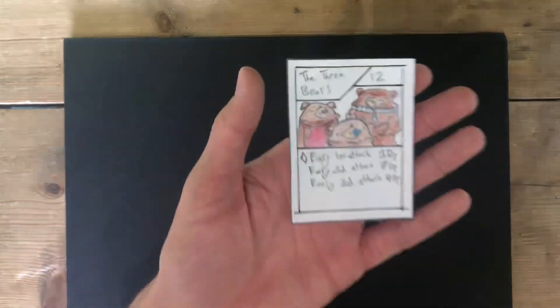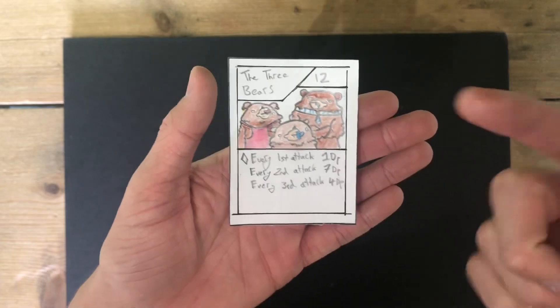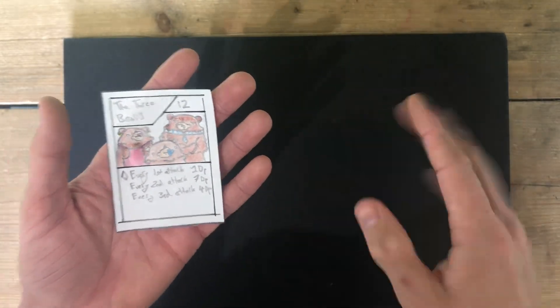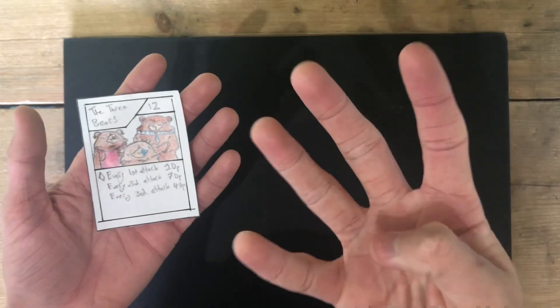The next card coming to the game is the 3 Bears. With 12 HP, the first time they attack, they do 1 damage, too small. The second time they attack, they do 7 damage, too big. And the third time they attack, they do 4 damage, just right.